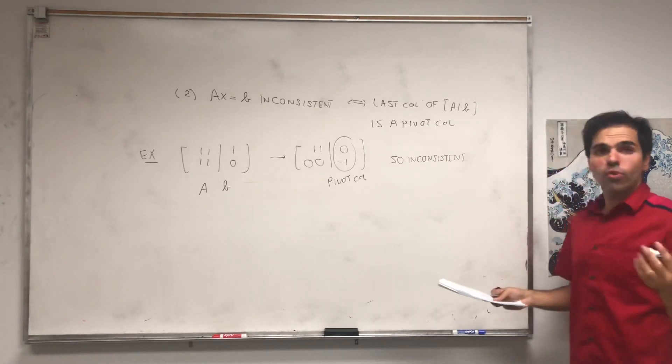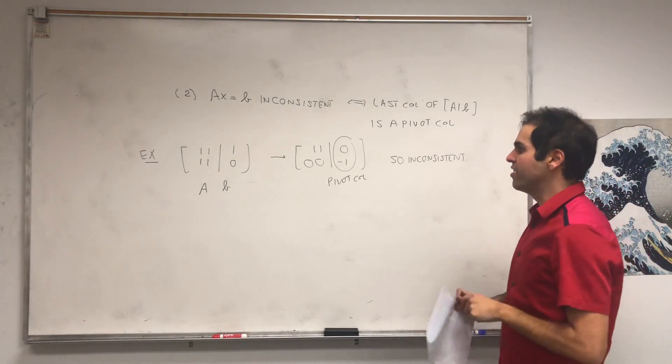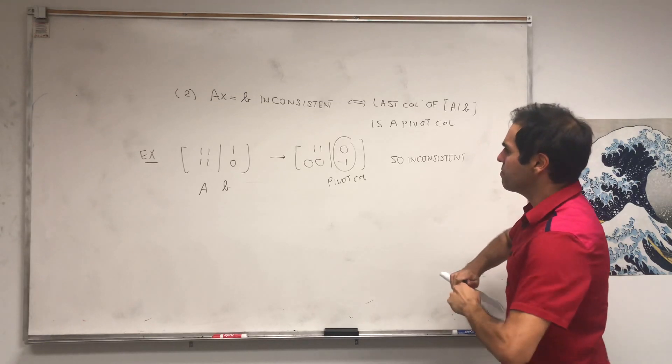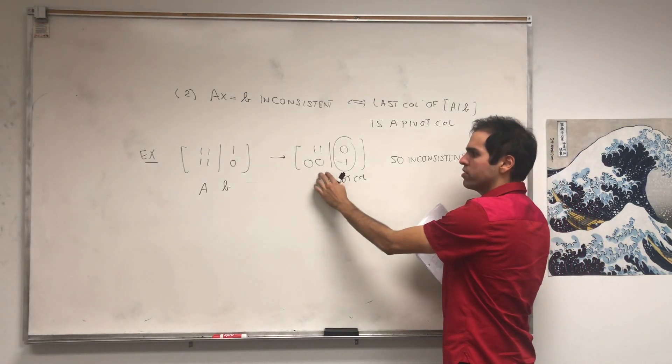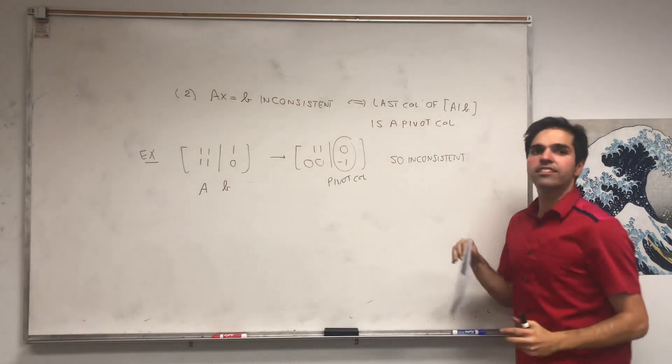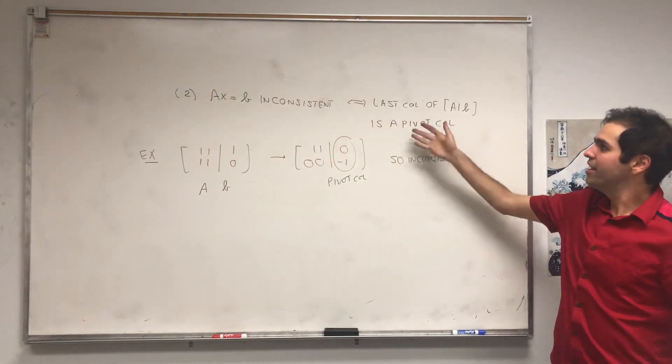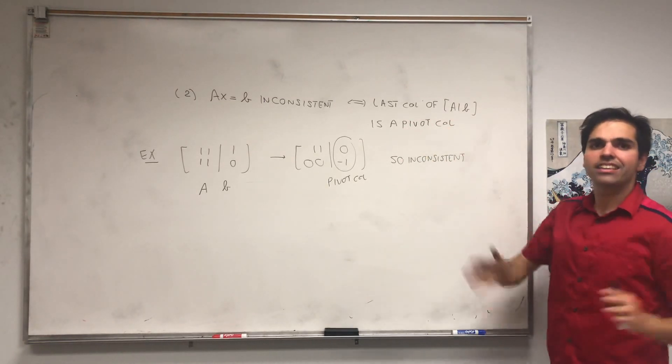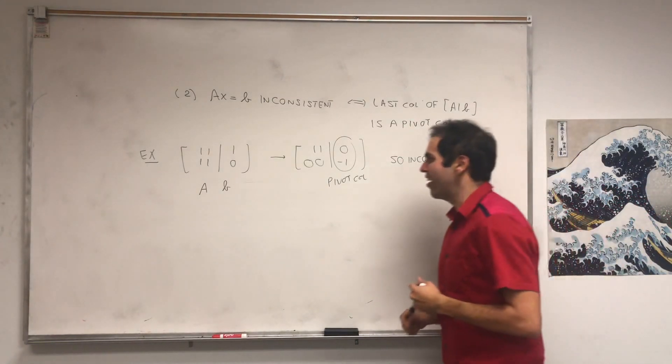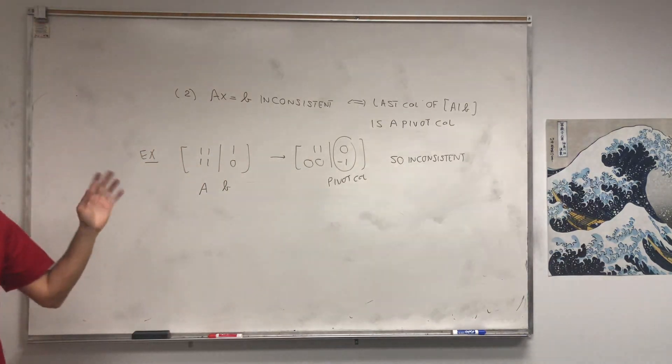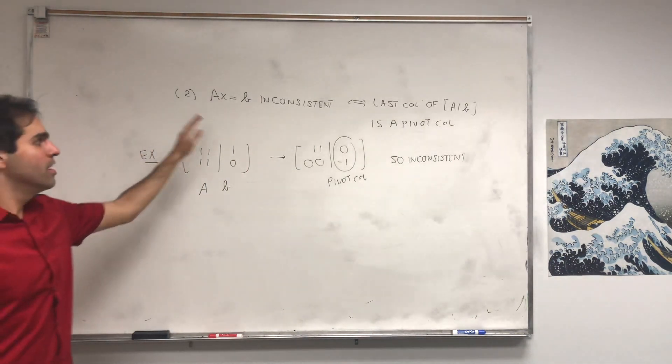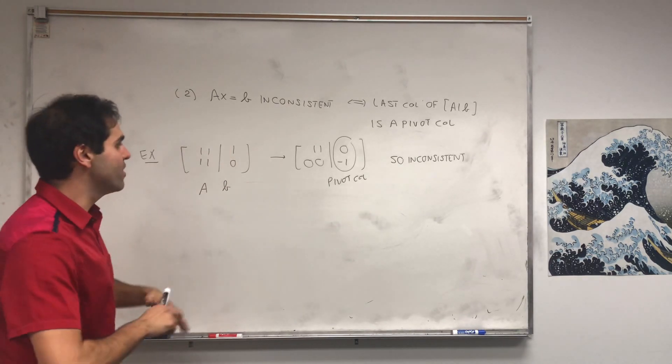Or in other words, you've maybe seen this in another term, namely, if one row of the form [0, 0, 0, 0, something else], then the system is inconsistent, which is equivalent to saying the last column is a pivot column just by the nature of pivots. Okay. And the reason why this is true is just follows from the rank theorem.